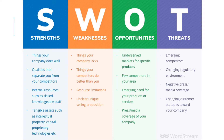Strengths are things the company does well — particular qualities we have in our business, such as skilled knowledgeable staff, or particular assets like good ideas we have patents on or excellent capital. These are all strengths internal to the business. Weaknesses are things the company lacks or doesn't do very well — maybe things our competitors do better than us, limited resources, or perhaps a lack of a clear unique selling point. These are things we would seek to minimize with our strategies.